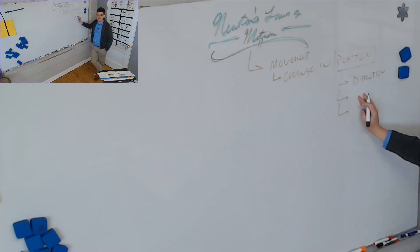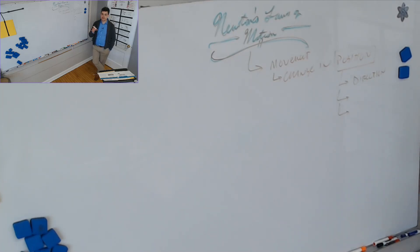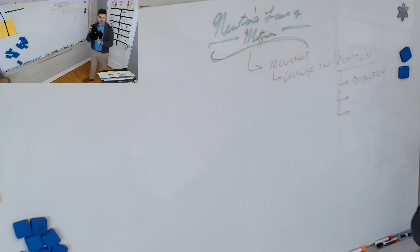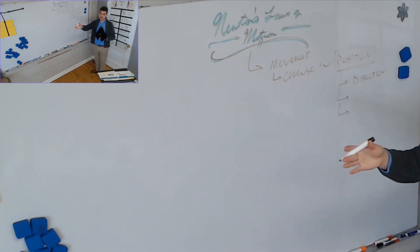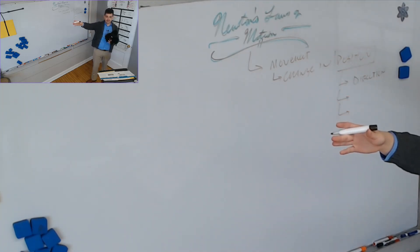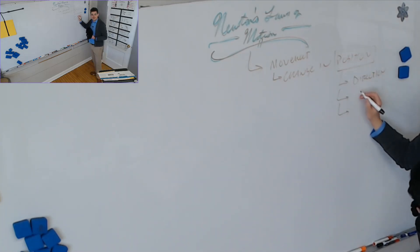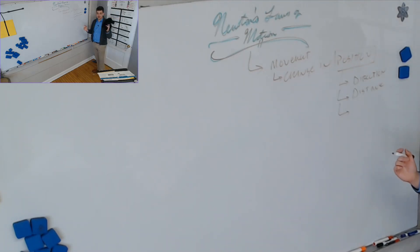If I was describing to a computerized gorilla how to get my pencil and I said 'over there,' it would just keep walking in that direction forever, bumping into stuff. I'd have to say a specific direction — northeast — and also a distance. I might say two and a half meters northeast of here. So we need a distance.